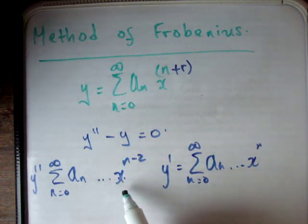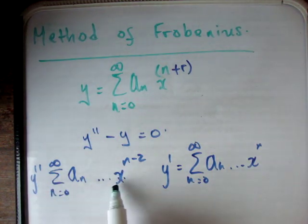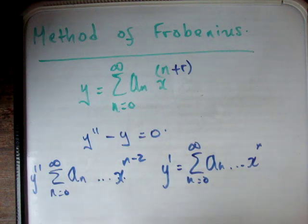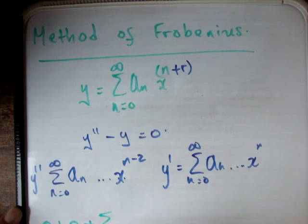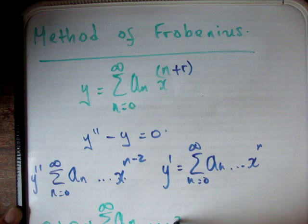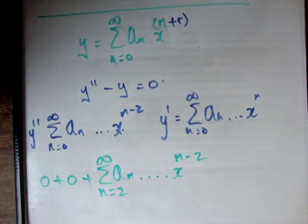What we did was we wrote out the first two terms in the y double prime part, and then we used just the series that was left. For example, for n equals zero we were going to get zero, n equals one we got one, and then we had plus n equals two up to infinity of a_n times x to the n minus 2.